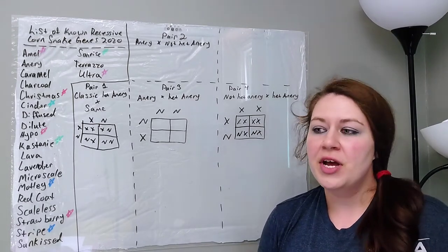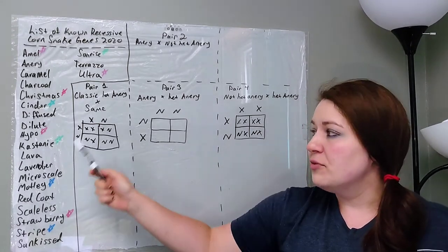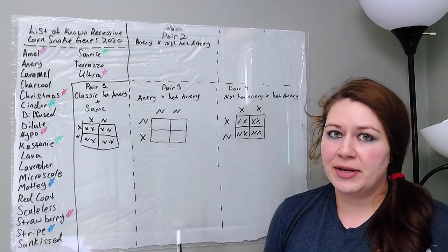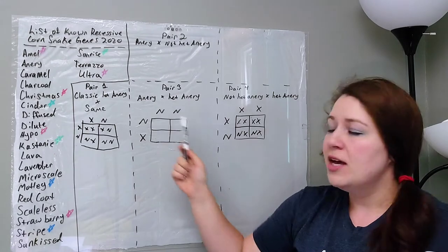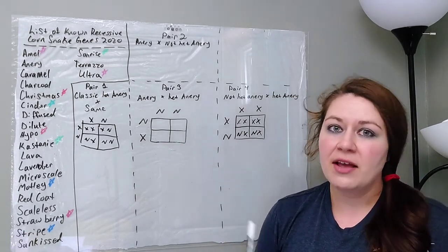I mentioned this in the last video, so just remember that in recessive genes, which is all the ones we're talking about today, in order for it to show, it does have to be homozygous. It has to be on both sides of the DNA.